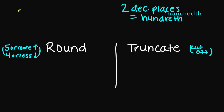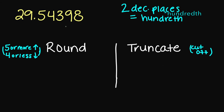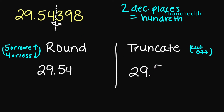What about 29.465439? Two decimal places puts me right here at the 4. If I look next door, I have a number under 5, so I'm rounding down. That means you're going to get 29.54 if you round to two decimal places. And if you truncate, you would also get 29.54.